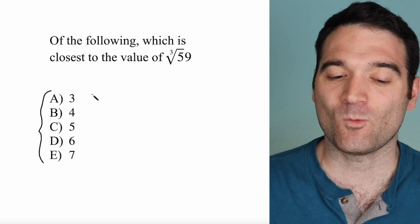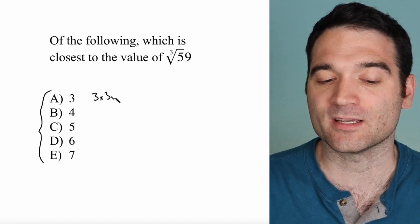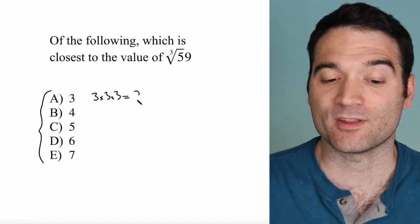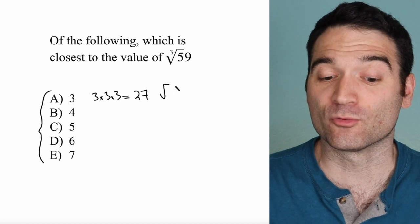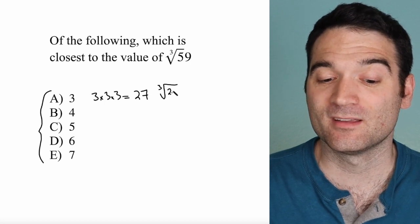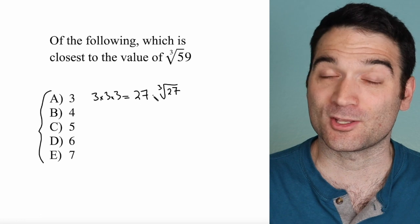Take 3, for instance. What is 3 times 3 times 3? Well, it's 27. And that means that the cube root of 27 is 3. So 3 is the cube root of 27.